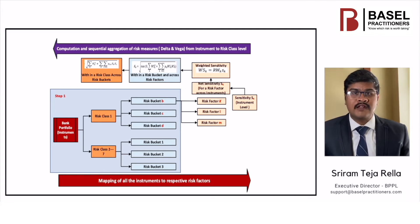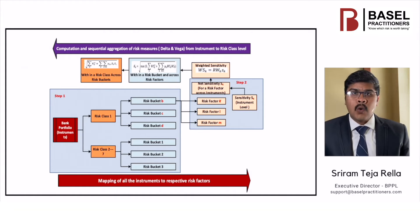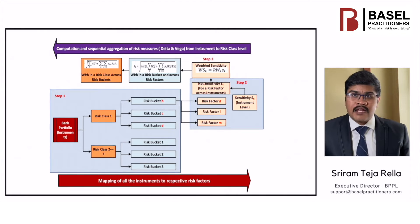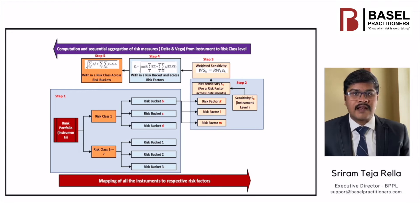For risk class 1, there are three risk buckets like B, C, and D at instrument level. Step 2: Calculation of the risk factor sensitivities at instrument level. In this example, risk bucket B has three risk factors like K, L, and M. The requirement is to calculate the sensitivity for each risk factor and compute the net sensitivity of a risk factor across the instruments. Step 3: Calculation of weighted sensitivities at a risk factor level using the regulatory risk weights across the instruments. Step 4: Aggregation of weighted sensitivities per bucket, duly factoring the diversification benefits through correlation.